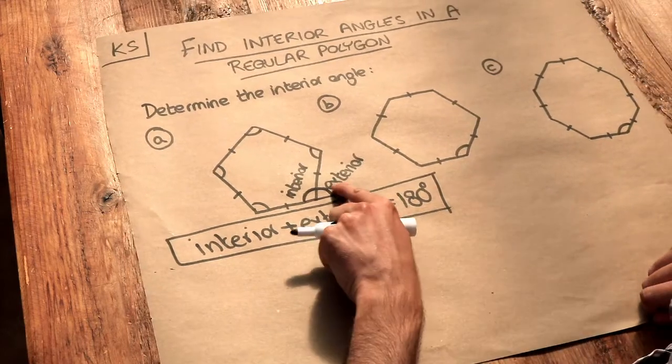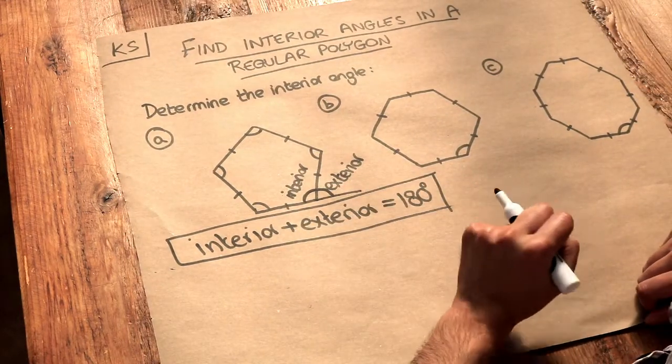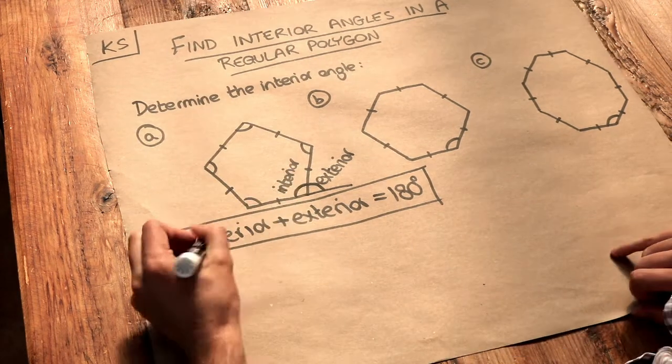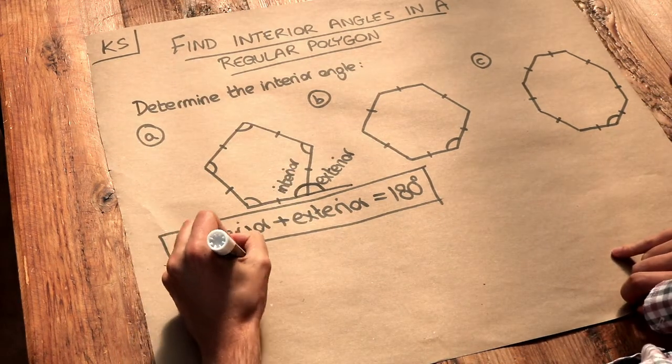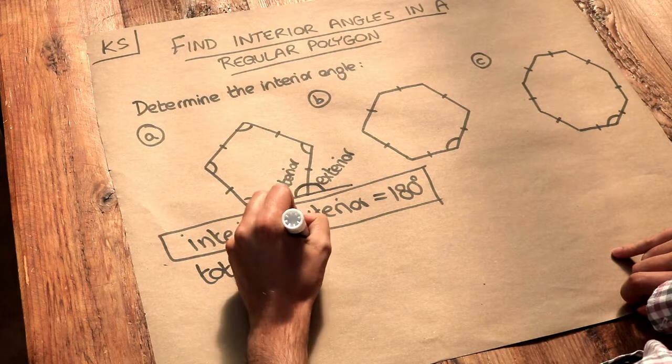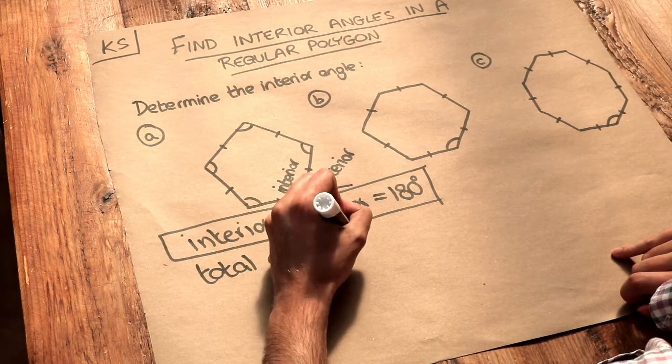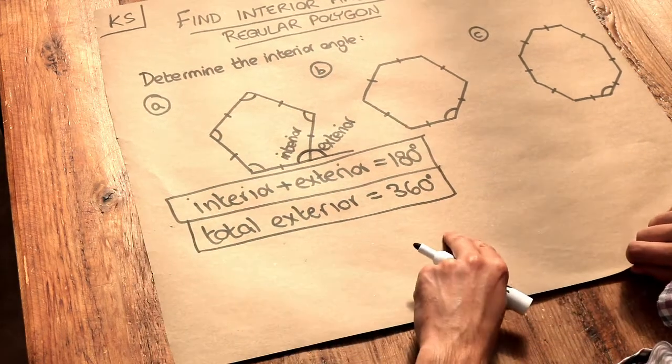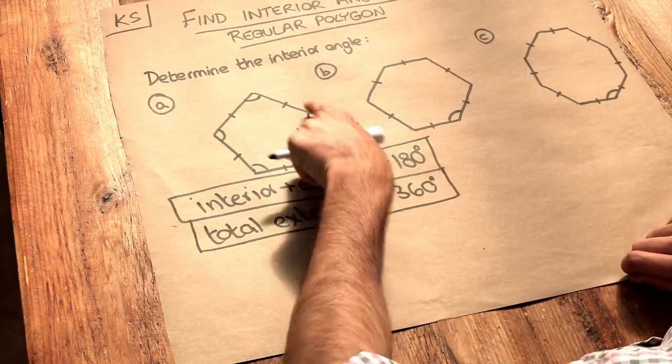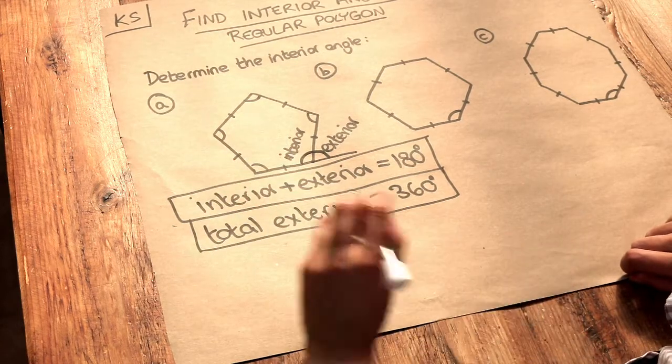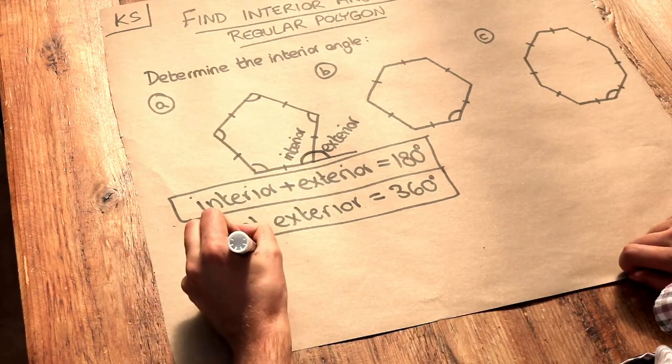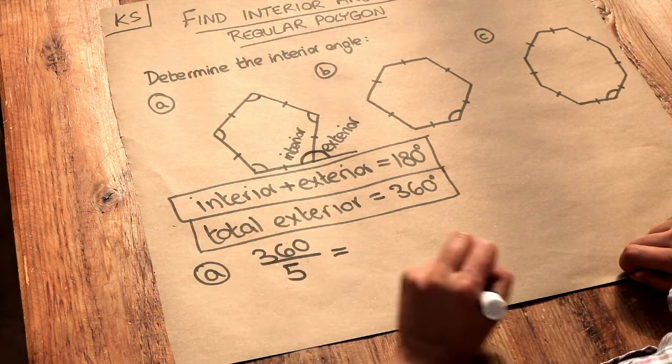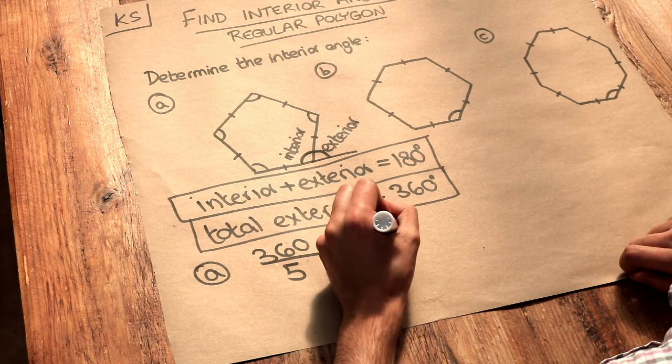We also saw that we could find the exterior angle by doing 360 degrees divided by the number of sides. That's because the total exterior angle of any polygon, regular or irregular, was equal to 360 degrees. So we can find each of these five exterior angles by just doing 360 divided by the number of sides. That will give us each exterior angle, and that will be 72 degrees.